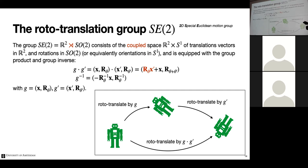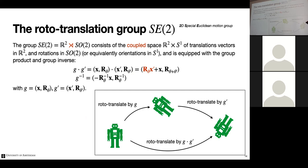A more interesting example is the roto-translation group, consisting of translations in R² and rotations represented by angles. Technically it's a semi-direct product of translations and rotations. The group product combines a translation and rotation with another translation and rotation: the rotation acts on the spatial part, and if an object has an orientation, that orientation is rotated accordingly.